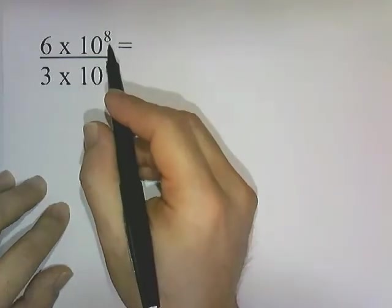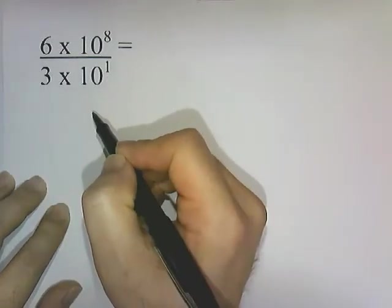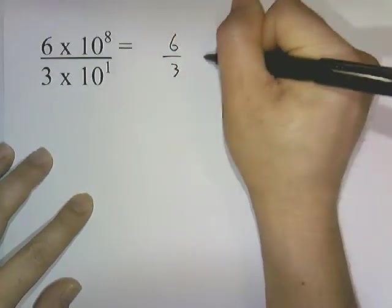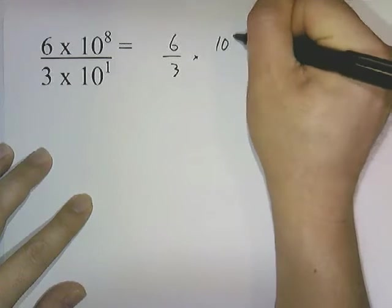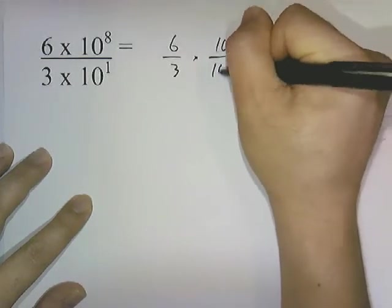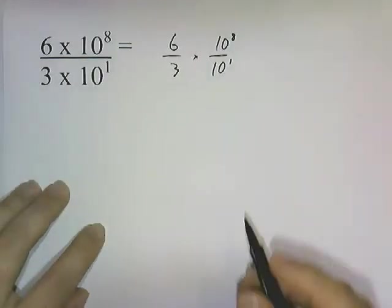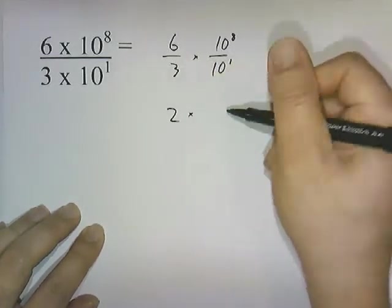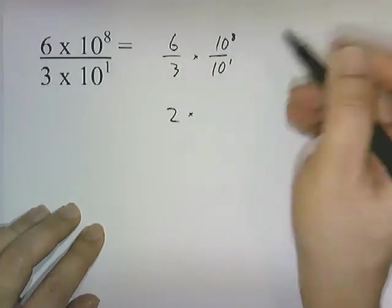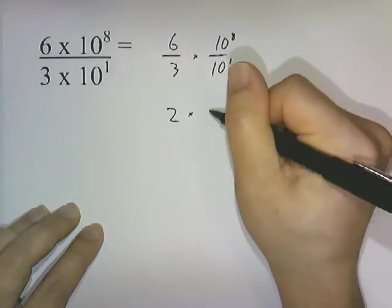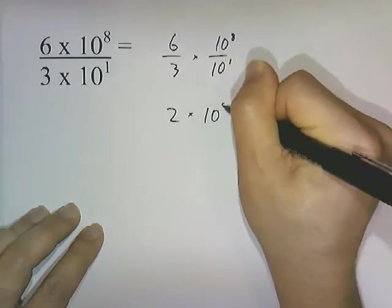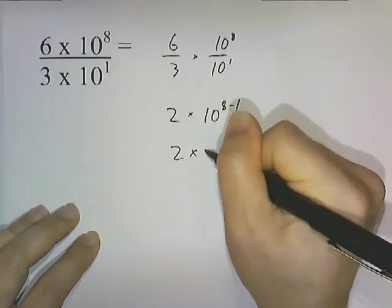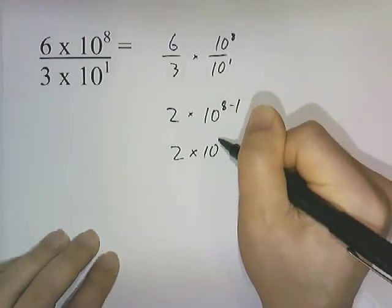Let's try a division: 6 times 10 to the 8th divided by 3 times 10 to the 1. We can rewrite this as 6 divided by 3, times 10 to the 8th divided by 10 to the 1. 6 divided by 3 is 2, and for dividing powers of 10 you subtract the exponents: 10 to the 8th minus 1. The final answer is 2 times 10 to the 7th.